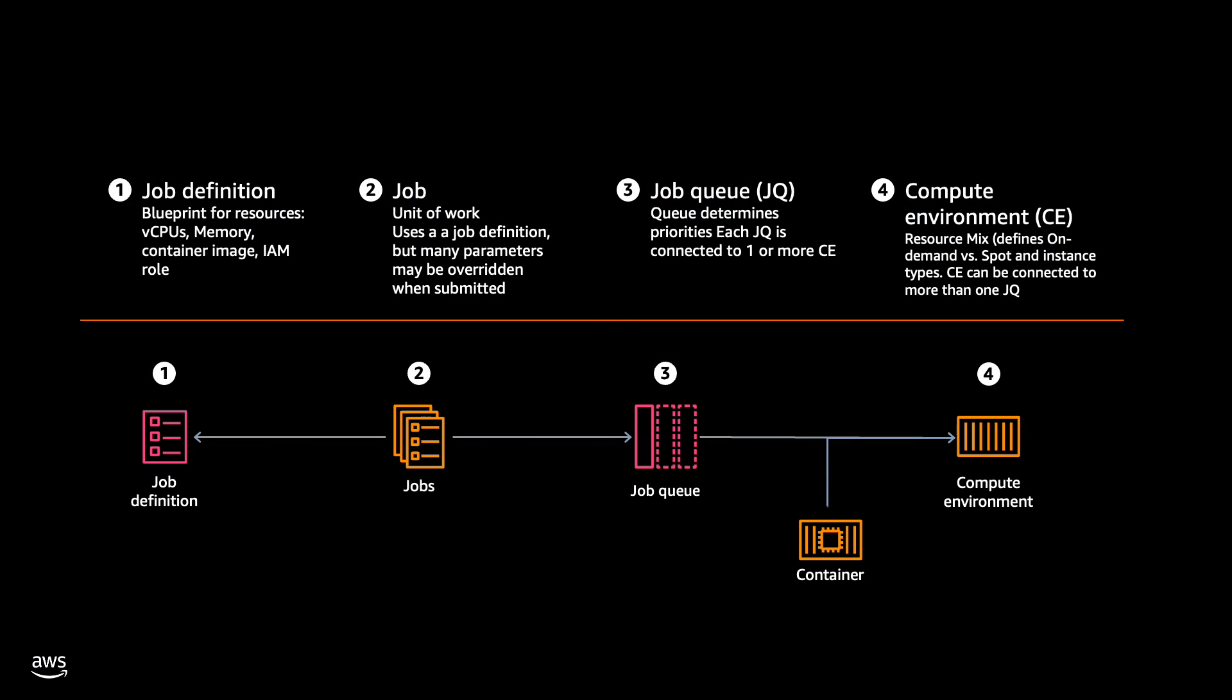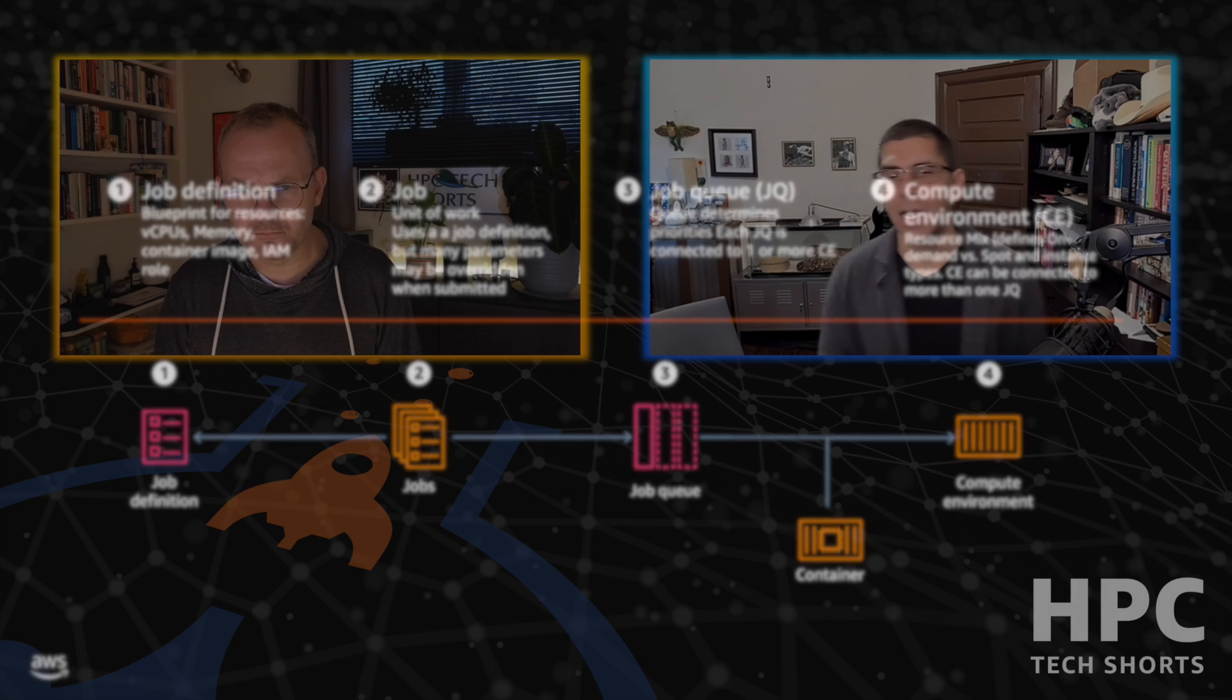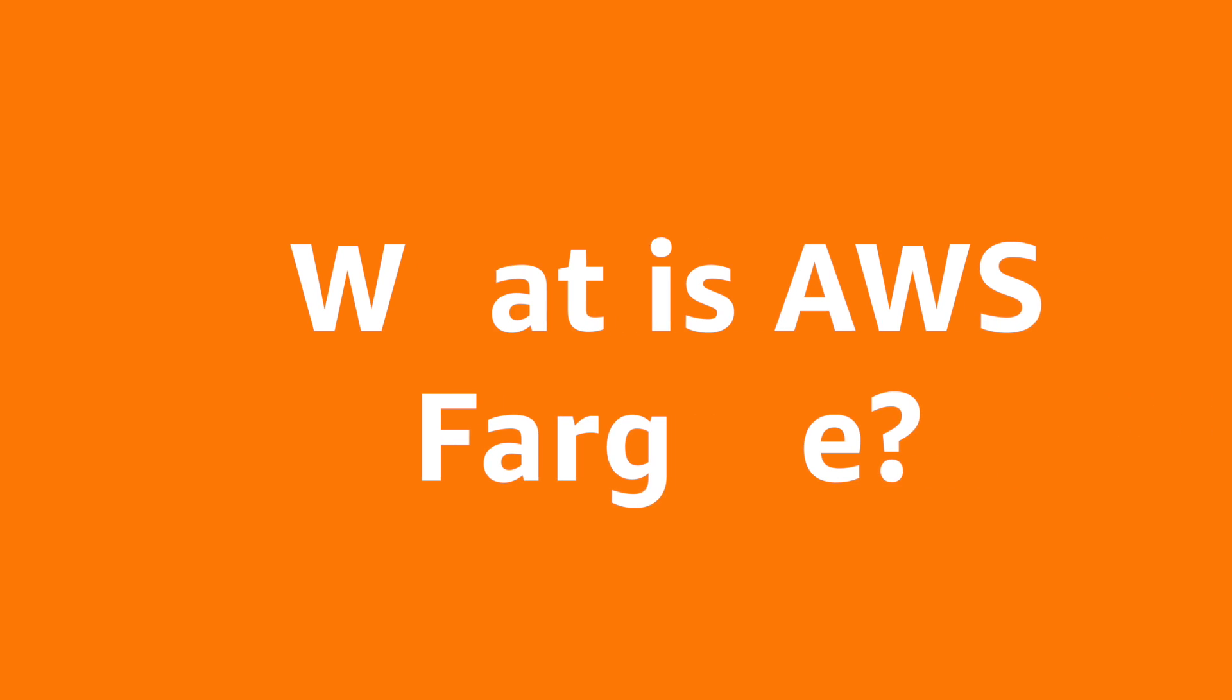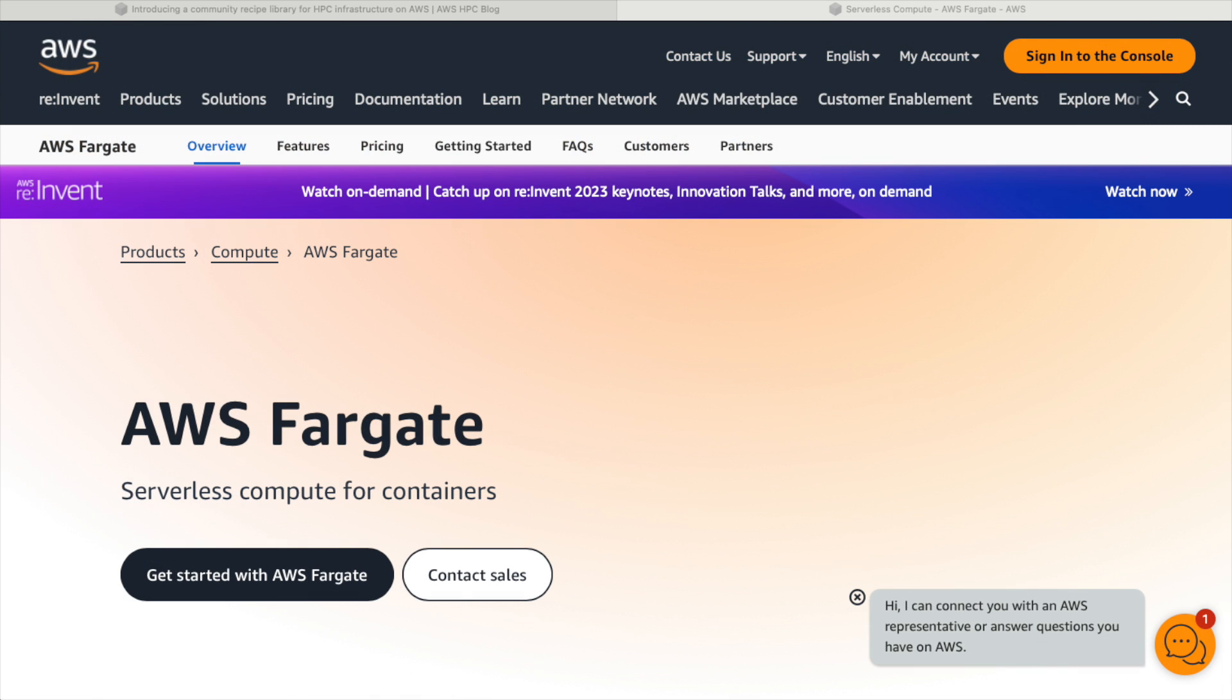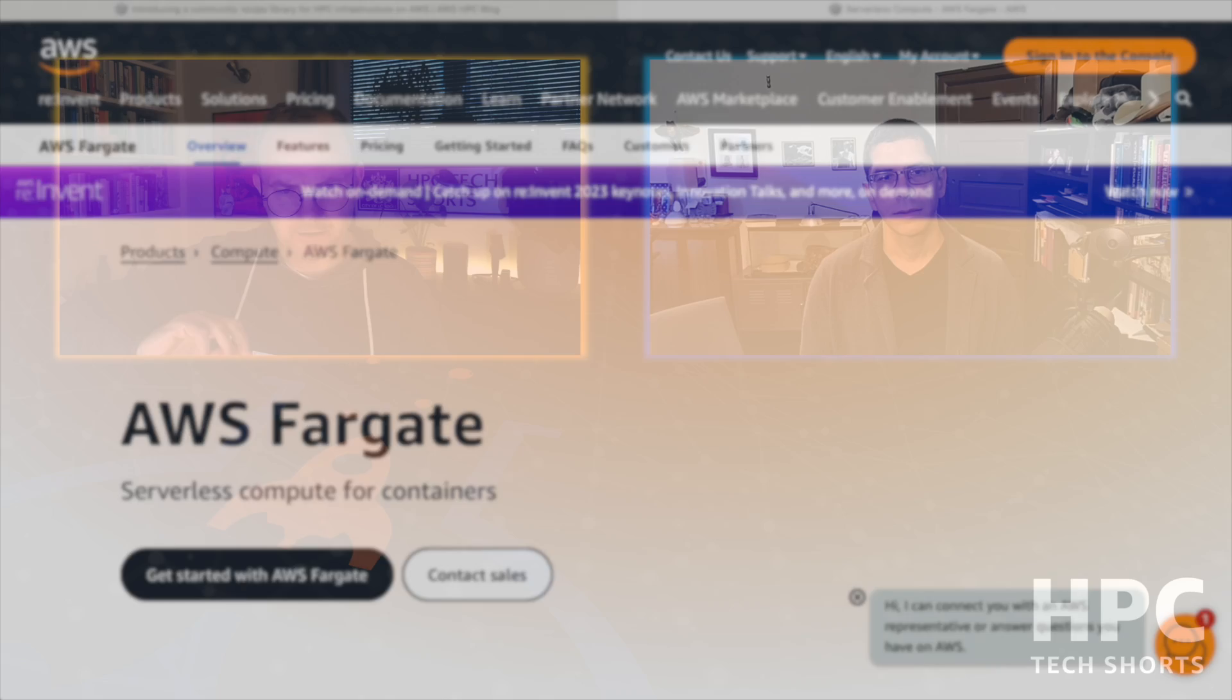Fargate is different from EC2 because you reach out with a container and say 'Fargate, I want to run this container' rather than saying 'Batch, can you spin me up an EC2 instance to run a container on.' You're just saying to Fargate 'I don't care, make it so.'